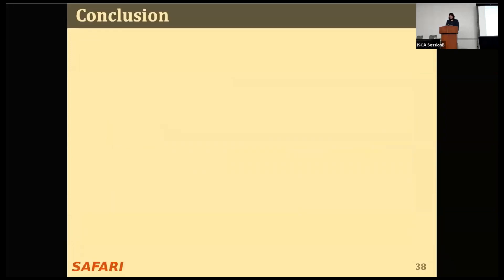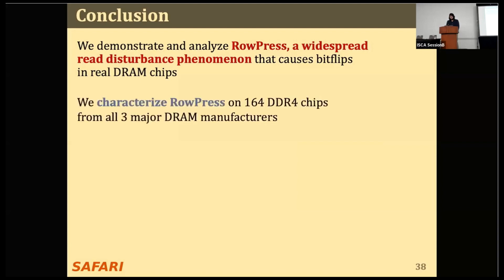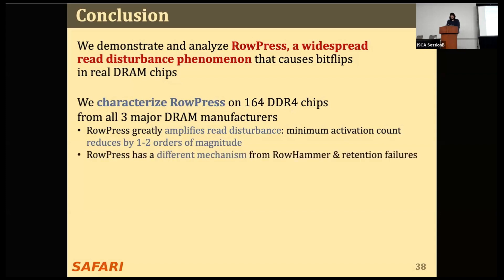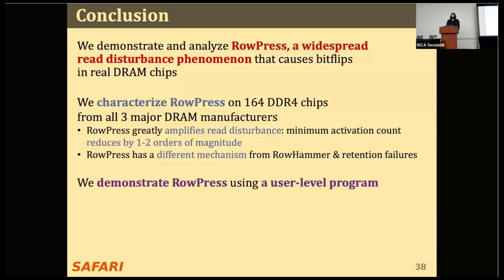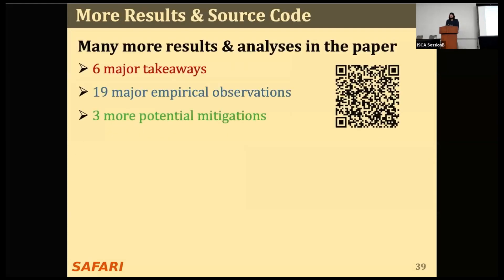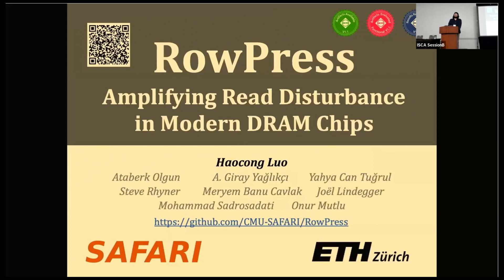Now let me conclude my talk. In this work, we demonstrated and analyzed RowPress, a widespread read disturbance phenomenon that causes bit-flips in real DRAM chips. We characterize RowPress on DRAM chips from all three major DRAM manufacturers, and we find that: first, RowPress greatly amplifies read disturbance by reducing the minimum activation counts needed to cause bit-flips by one to two orders of magnitude, and in extreme cases only one activation causes bit-flips. Second, RowPress has a different mechanism compared to RowHammer. We demonstrate RowPress in a real system with a user-level program that can induce bit-flips when RowHammer cannot. We provide effective solutions to mitigate RowPress at low additional performance overhead. Our work is fully open source and artifact evaluated. Thank you for your attention, and I'm happy to take any questions.